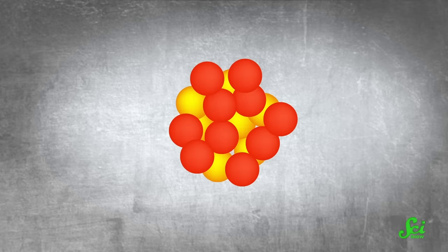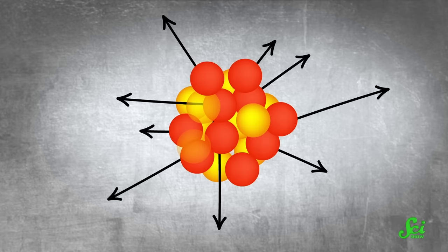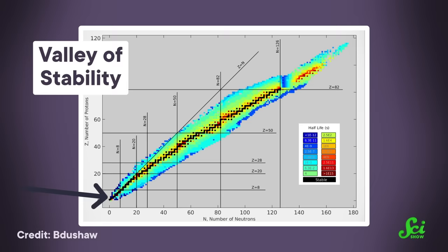But that brings us to an important question: why are some isotopes radioactive while others are stable? If we zoom in on the nucleus, the protons are all positively charged, so they repel each other. Adding neutral neutrons can compensate, but the more protons you have, the more neutrons you need to keep things stable. This leads to a pattern called the Valley of Stability — if we plot the number of neutrons and protons for all known isotopes in a chart, the stable ones all occur along the same line. But increasing the neutron-to-proton ratio only works for so long. Eventually the valley ends, and once you pass lead-208, everything is unstable and radioactive.